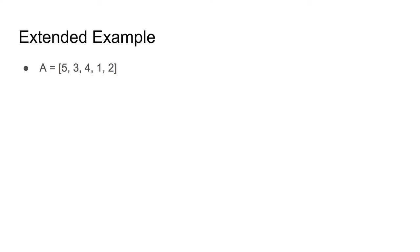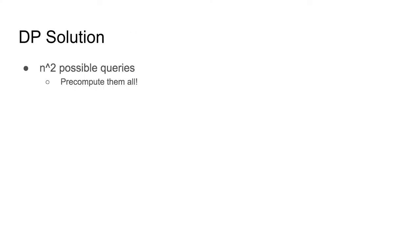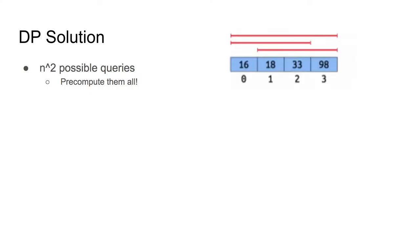We're going to go through a few extended examples using the same array: 5, 3, 4, 1, 2. The first solution we might think of is dynamic programming. There are only n² possible queries because i varies between 1 and n, and j has to be ≥ i, giving n(n+1)/2 — asymptotically n² — possible queries. So if there's only n² possible queries, we could just pre-compute all of them.